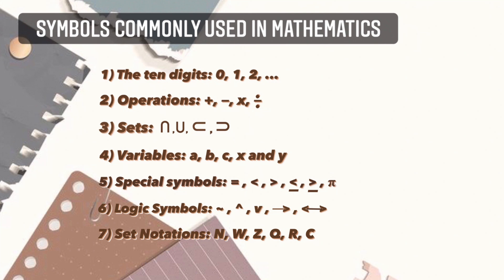Six is the logic symbols: negation, conjunction, disjunction, if-then, and if and only if. Seventh is the set notations. N represents natural numbers, W represents whole numbers, Z represents integers, Q represents rational numbers, R represents real numbers, and C represents complex numbers.